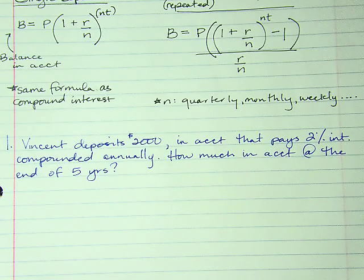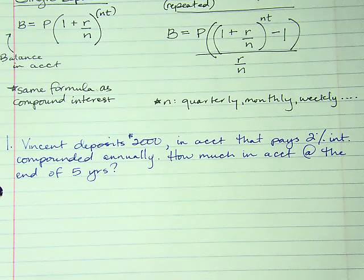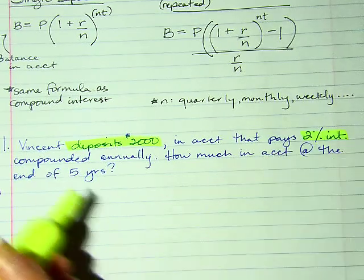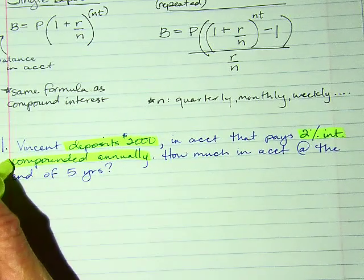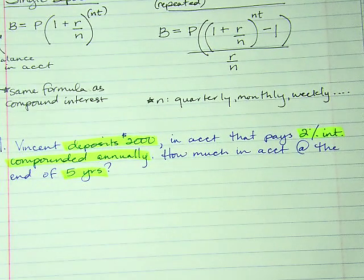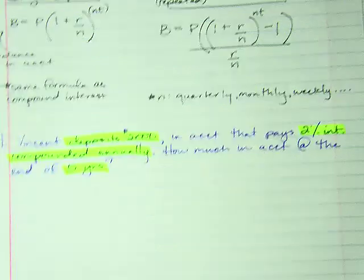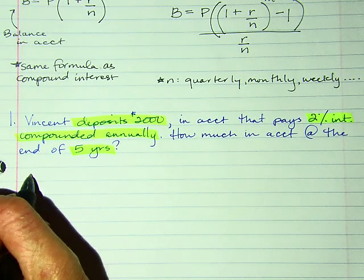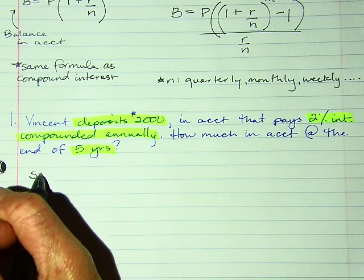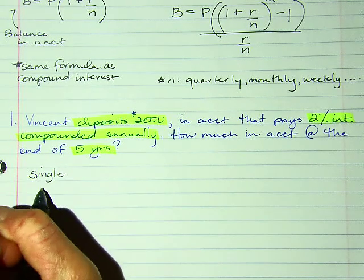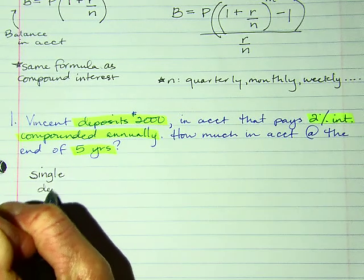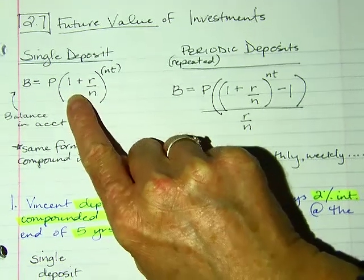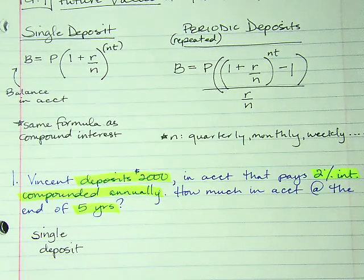He deposits $2,000, here's my 2% interest, compounded annually, five years. It doesn't mention that he ever makes another deposit, so I know this is a single deposit. I'll use the single deposit formula.